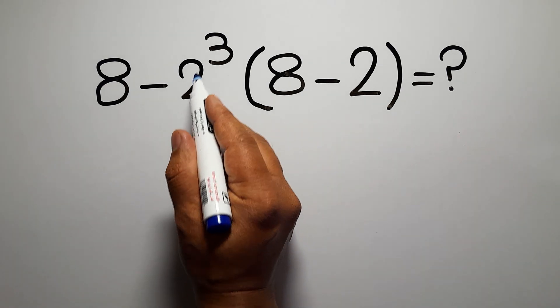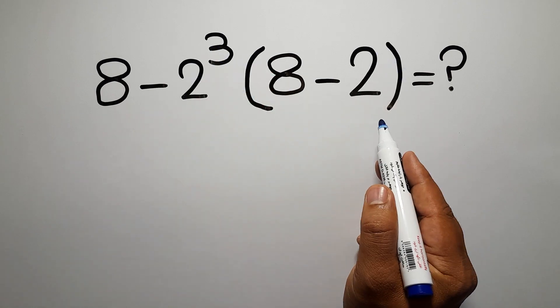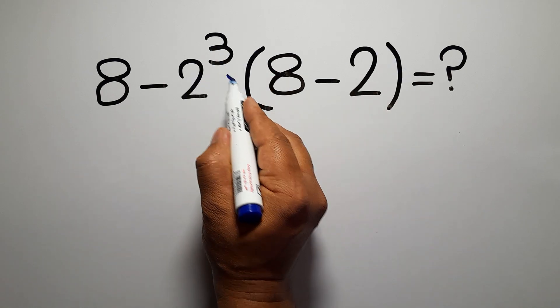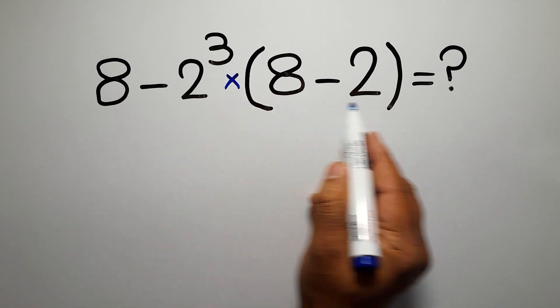We need to pay attention that when a number is placed next to parentheses, it means multiplication and we usually don't write the multiplication sign for brevity.